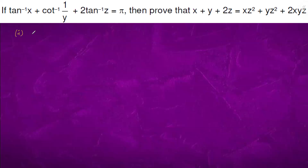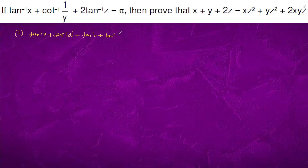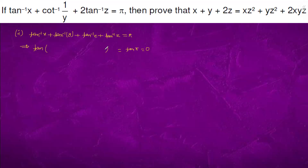In this question, we have tan⁻¹x + tan⁻¹y + tan⁻¹z written. If we take tan on both sides, we get 10 inverse X, 10 inverse Y, and we work with the expression to simplify, arriving at a value of 0 on one side.